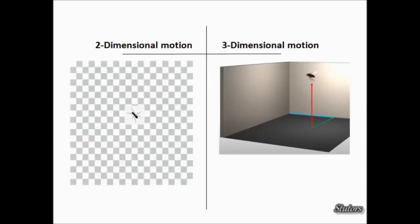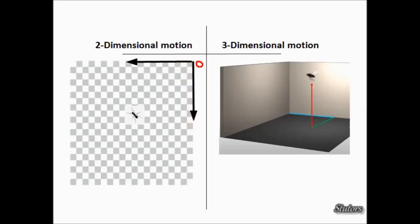Now let's see what two-dimensional motion is. When the same ant moves on the floor, you need two physical dimensions in order to mark its position. You can imagine the origin to be some corner. If you know the distance of the ant along one direction and the distance along the other direction, you will be able to mark the position of this ant accurately. So with two distances you can mark the position of the ant — such a motion is called two-dimensional motion.